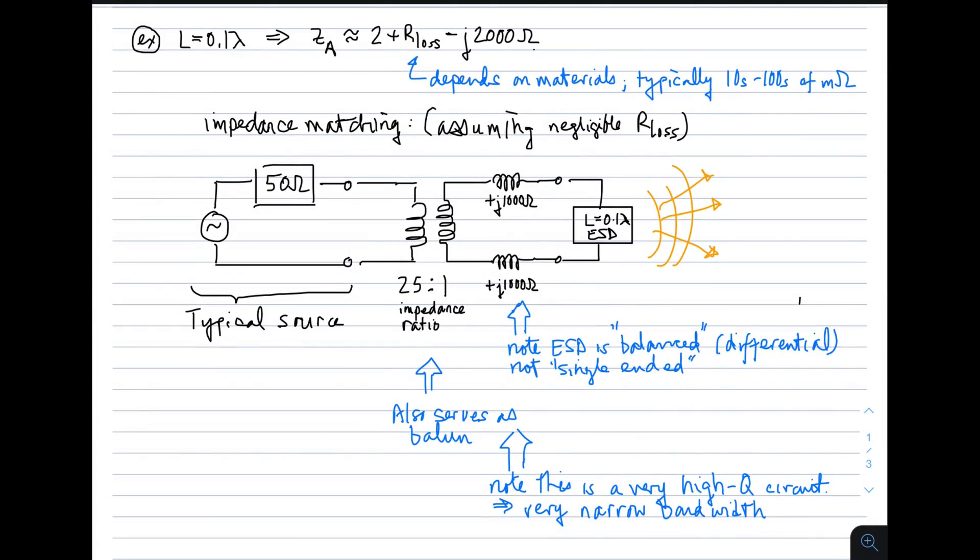So here's an example. If we choose a length of one-tenth of a wavelength, that's certainly electrically short. We obtain an impedance for this antenna of two. That's the radiation resistance. This is approximate values, by the way. Two ohms. The radiation loss depends, but it's typically somewhere on the order of tens to hundreds of milli-ohms, depending on the material you use.